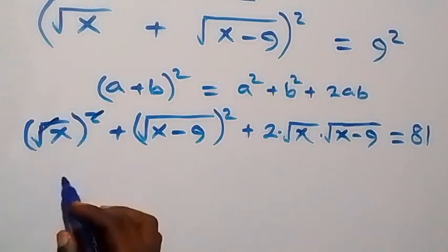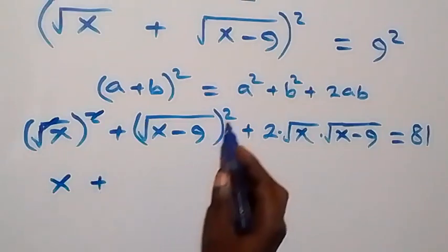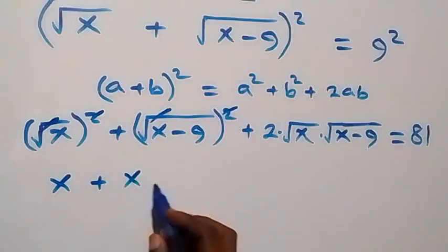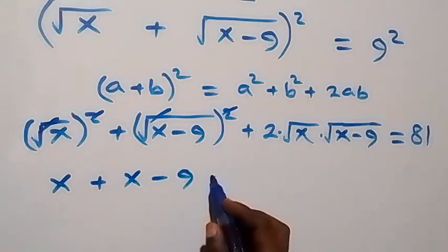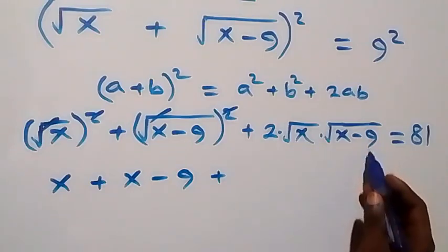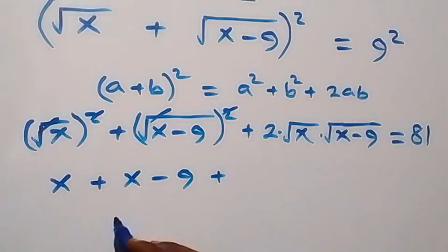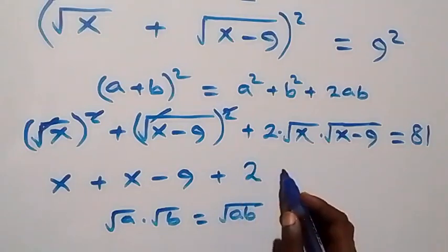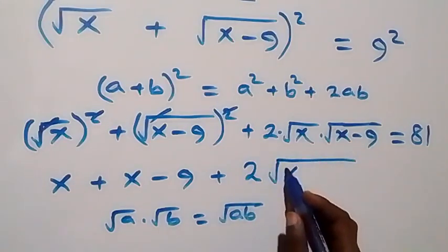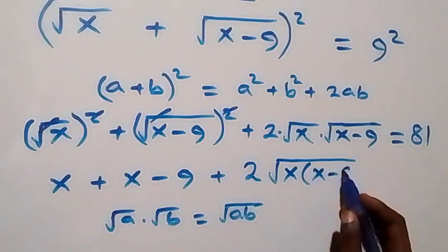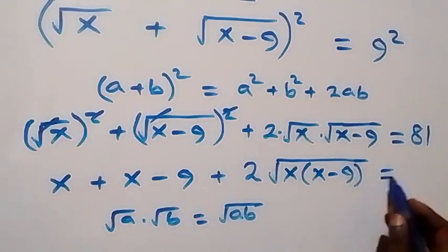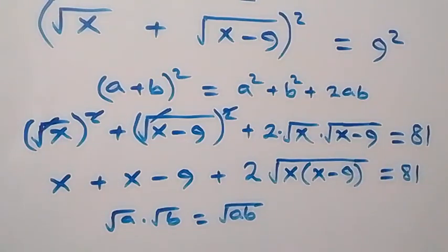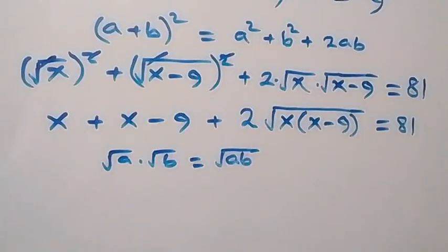Here, square cancels square root and we are left with x, then plus — square cancels square root — that becomes x minus 9. Then here we can join this together: root a times root b can be written as root of ab together. So this becomes 2 multiplied by square root of x times (x minus 9), then equals to 81.